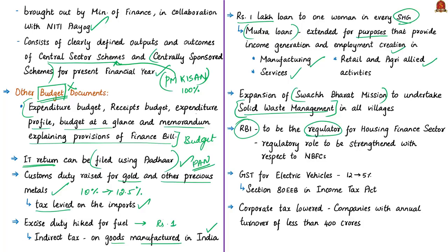It was also announced that the Reserve Bank of India is to be the regulator for the housing finance sector. It was also mentioned that the RBI is to be strengthened in its regulatory role with respect to Non-Banking Financial Companies (NBFCs). The GST for electric vehicles has been reduced from 12% to 5%.